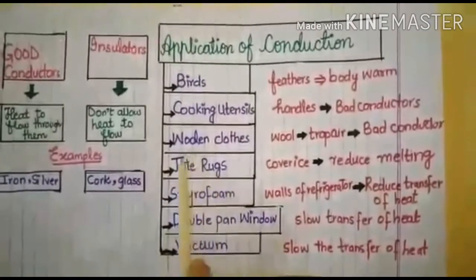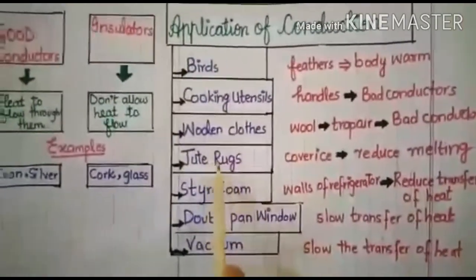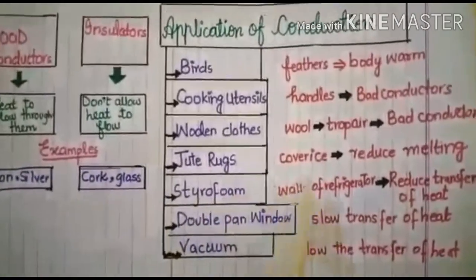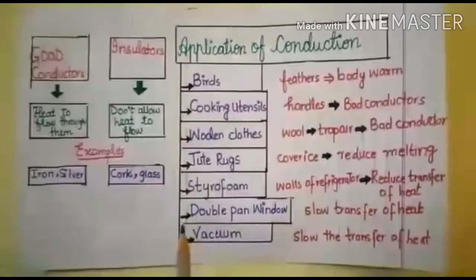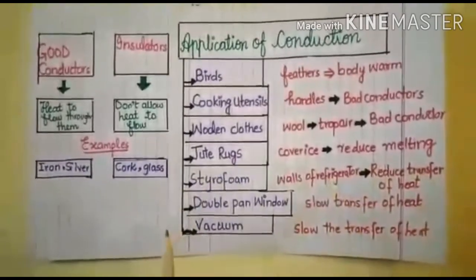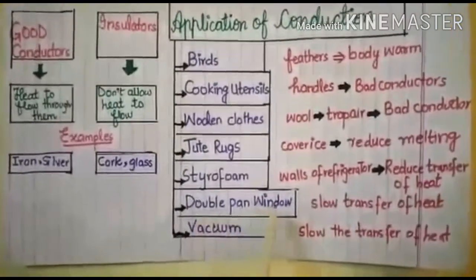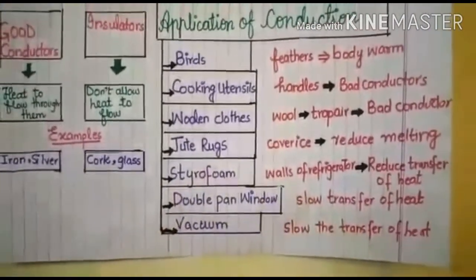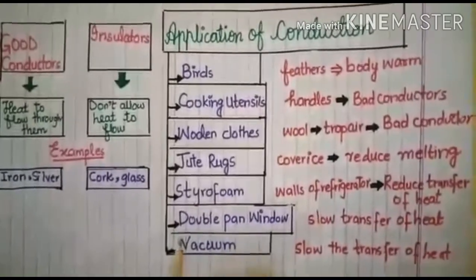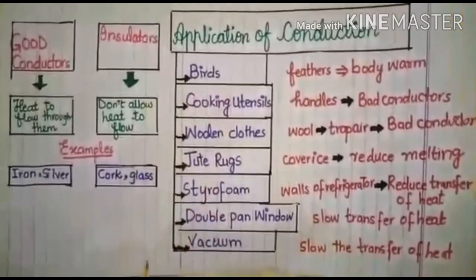Geotrugs that cover ice reduce melting because they are bad conductors of heat. The styrofoam present inside the walls of a refrigerator reduces heat transfer along the walls. Double-pane windows slow down the transfer of heat. Vacuum also slows down the transfer of heat. This is all for the topic of conduction.